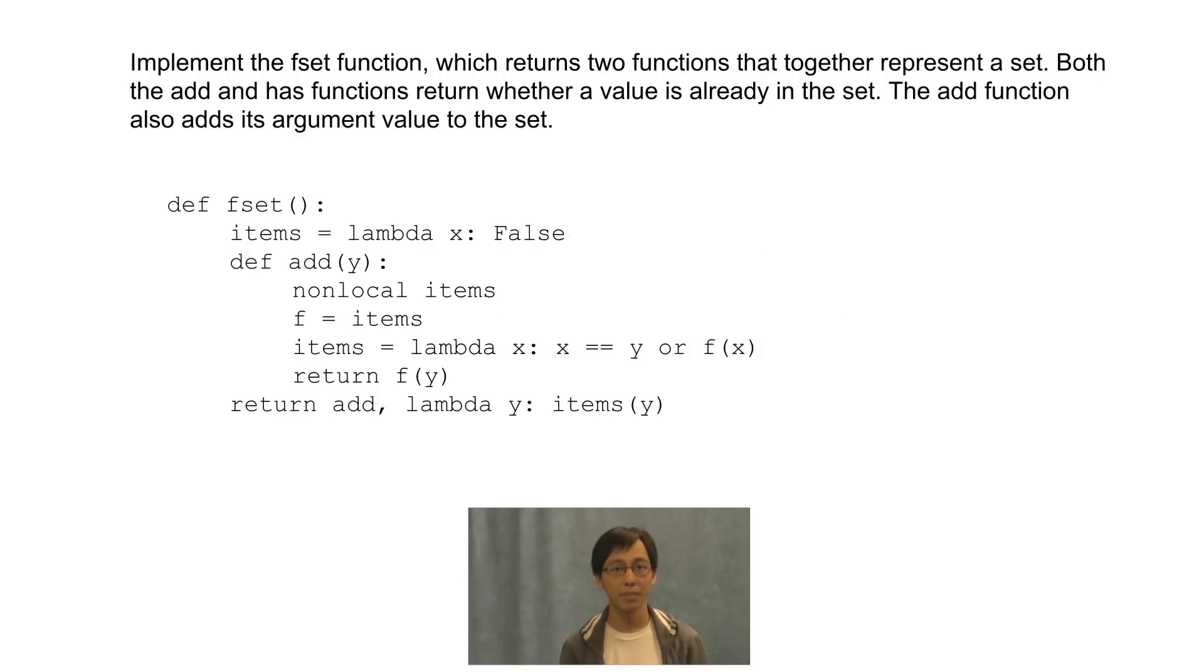Here's the function in its entirety. At this point, we have an empty set. So has is always going to return false no matter what we pass into has.